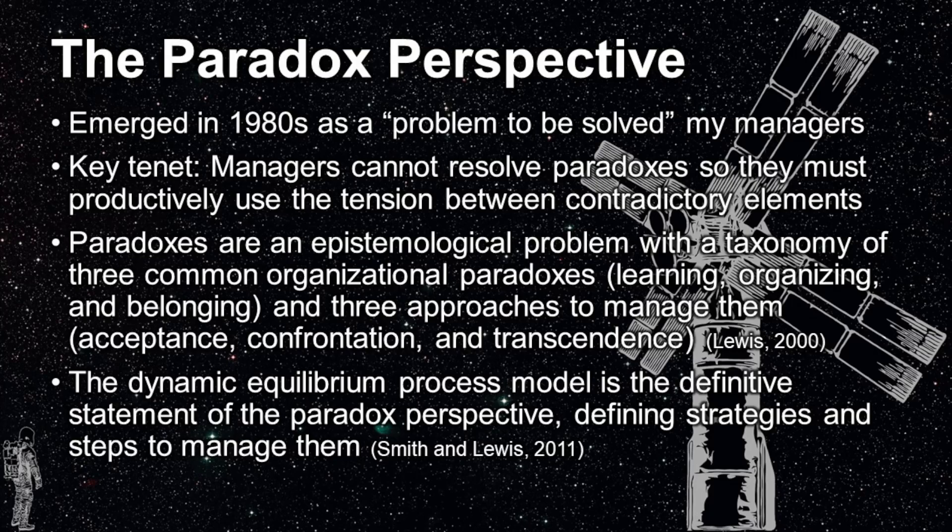A seminal paper written by Lewis on paradox theory defined them as an epistemological problem — that is, a product of discourse. Lewis defines a common organizational paradox taxonomy of learning, organizing, and belonging, and three approaches to managing them respectively, including acceptance, confrontation, and transcendence.